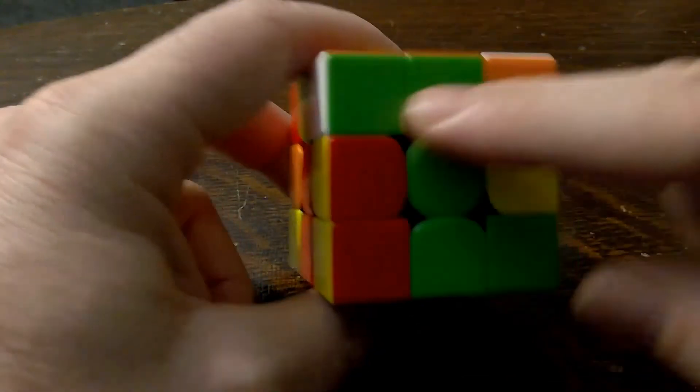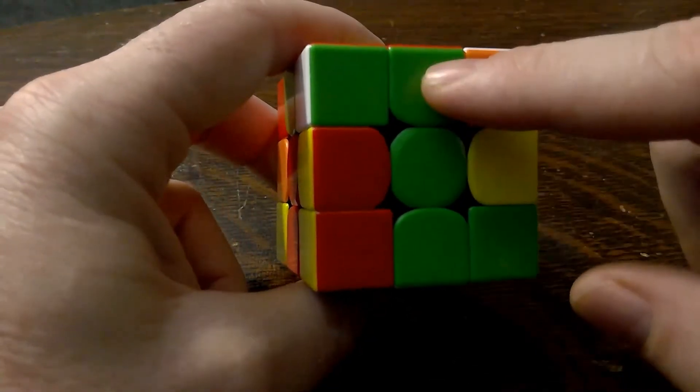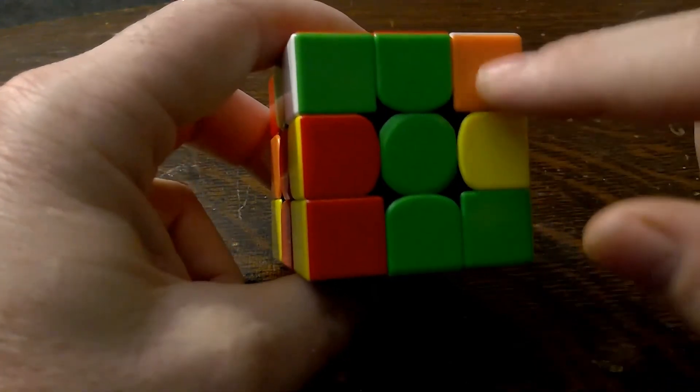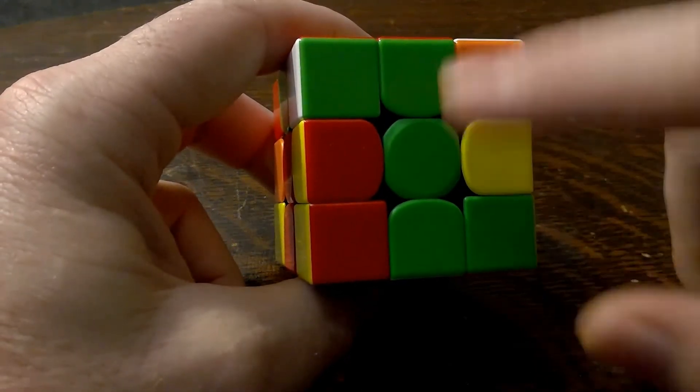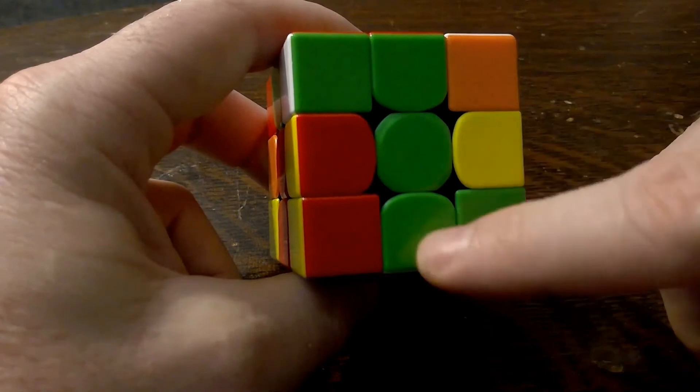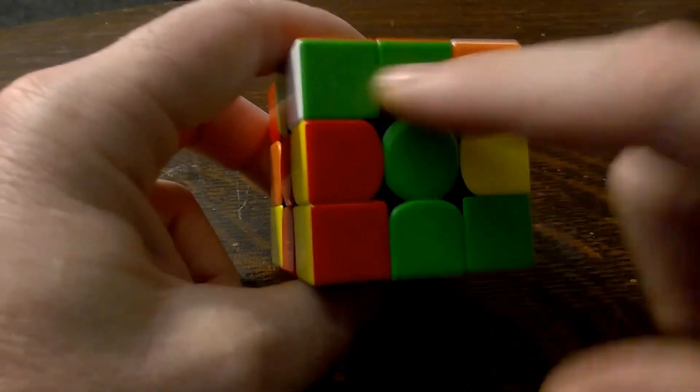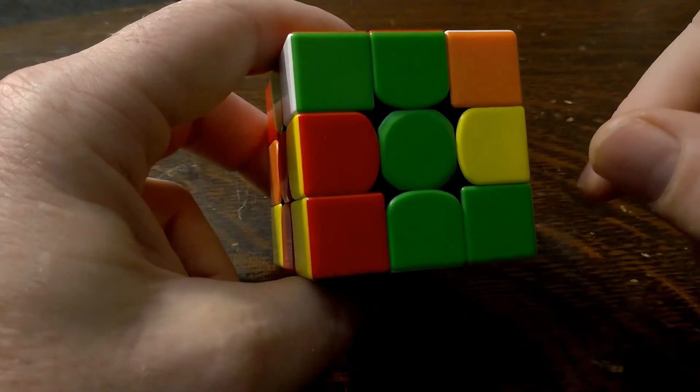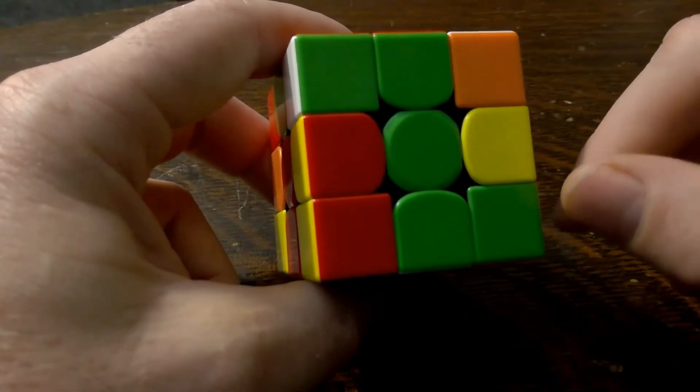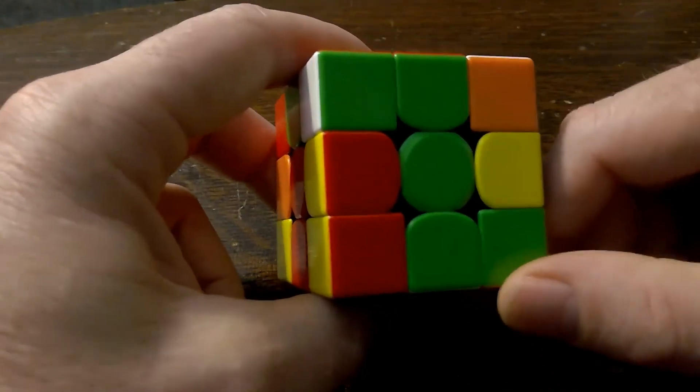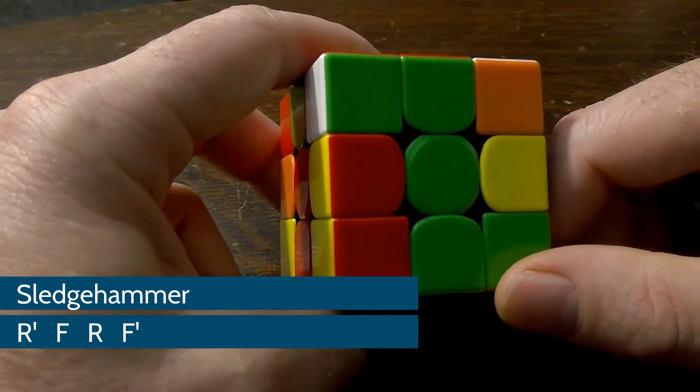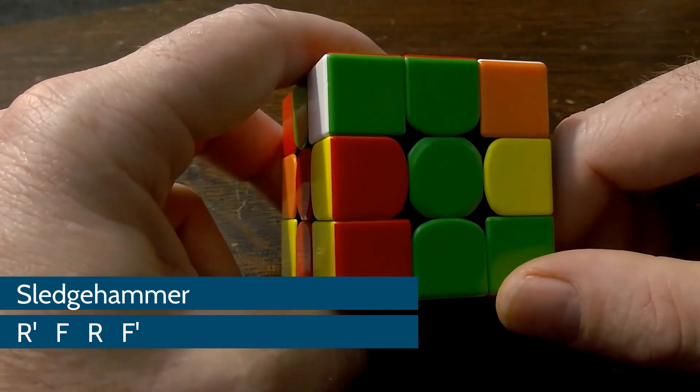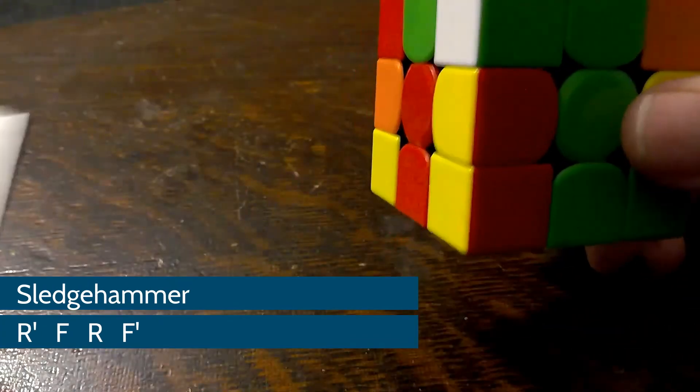I want you to notice that this looks kind of like a Sledgehammer, maybe with the backside broken off. But it's got the handle right here. And it's got the front of the Sledgehammer, kind of like a hammer or a Sledgehammer, right? Okay, and the Sledgehammer, the algorithm for Sledgehammer is R prime, F, R, F prime, okay?